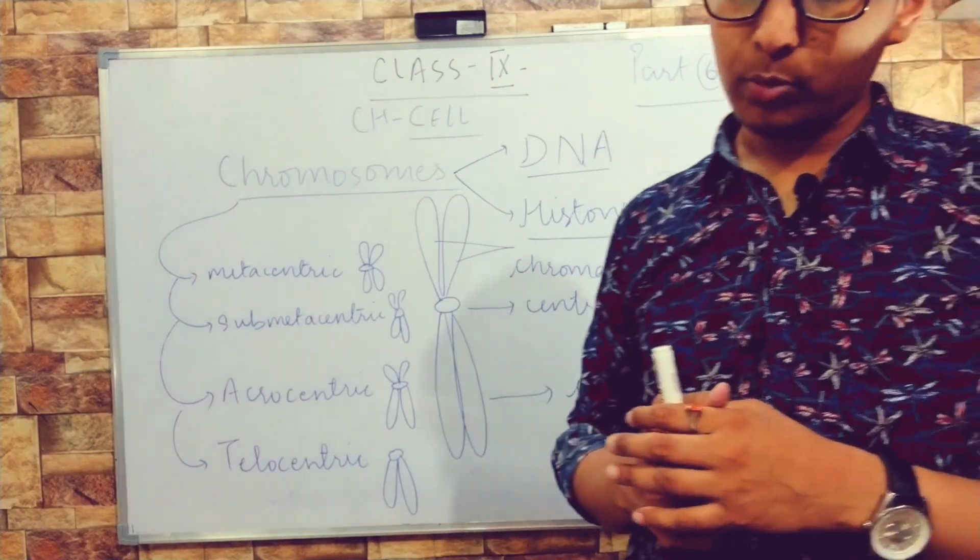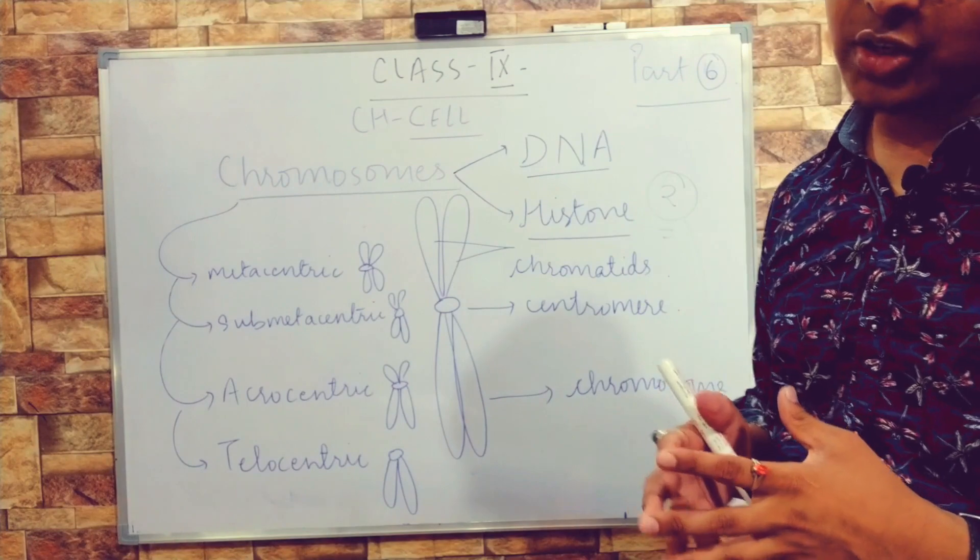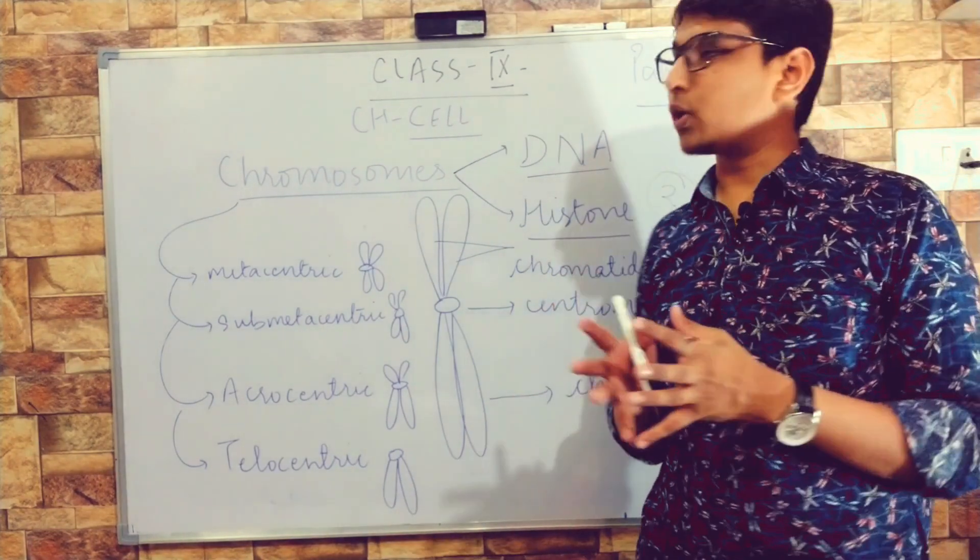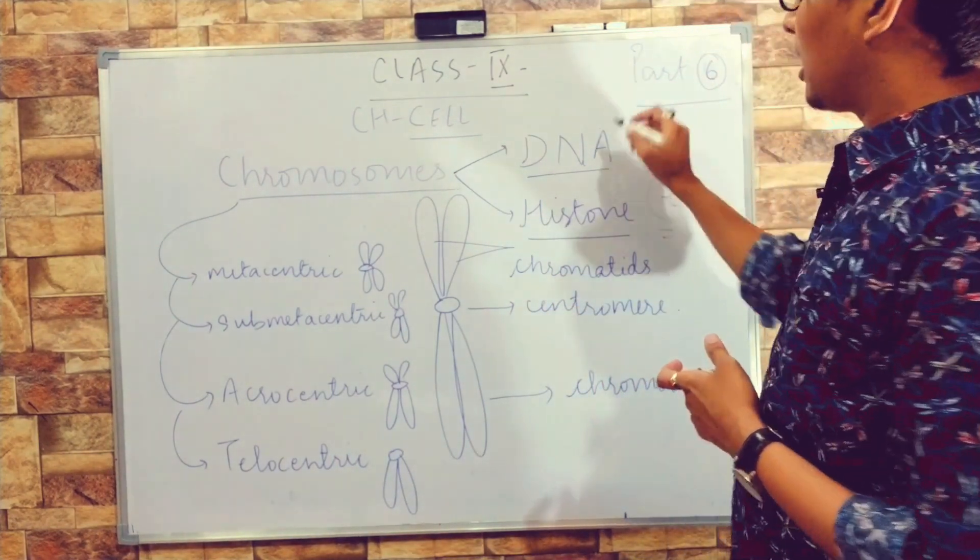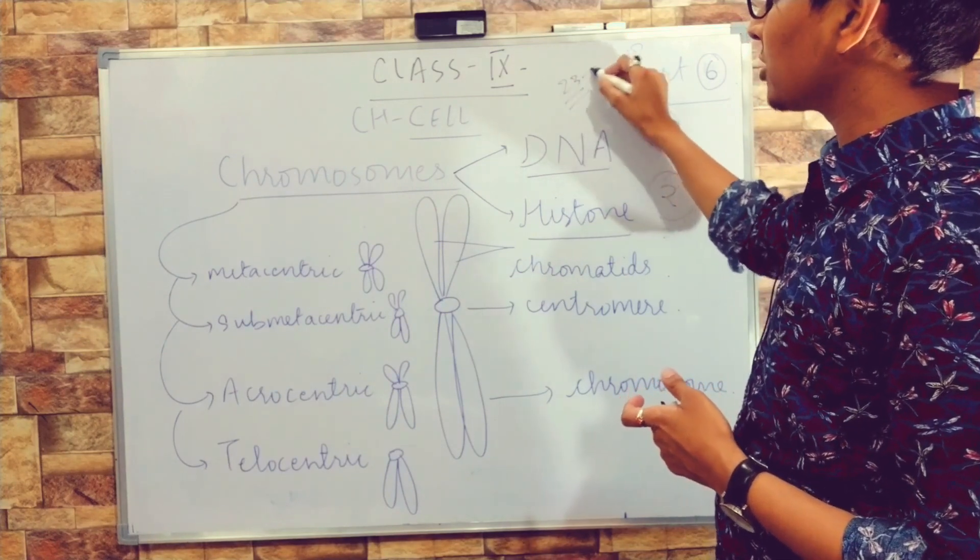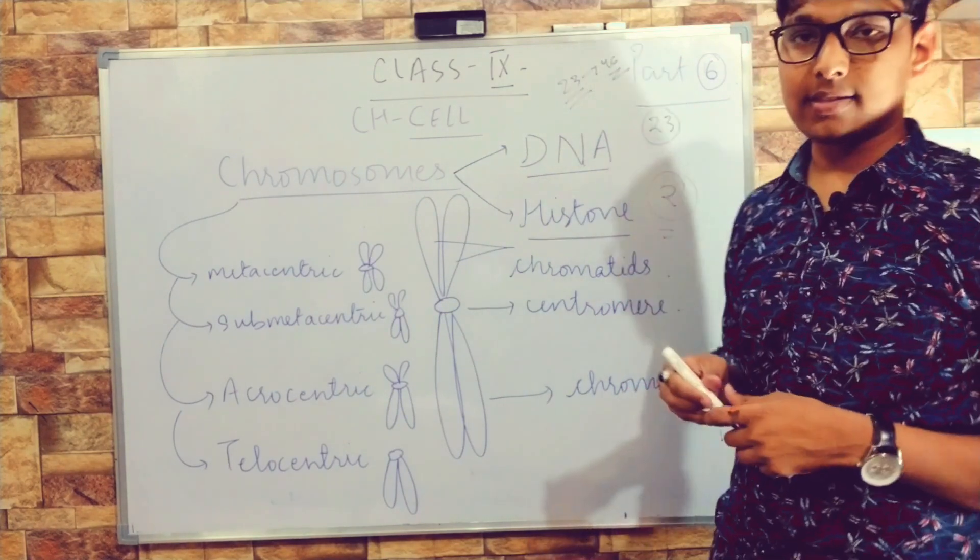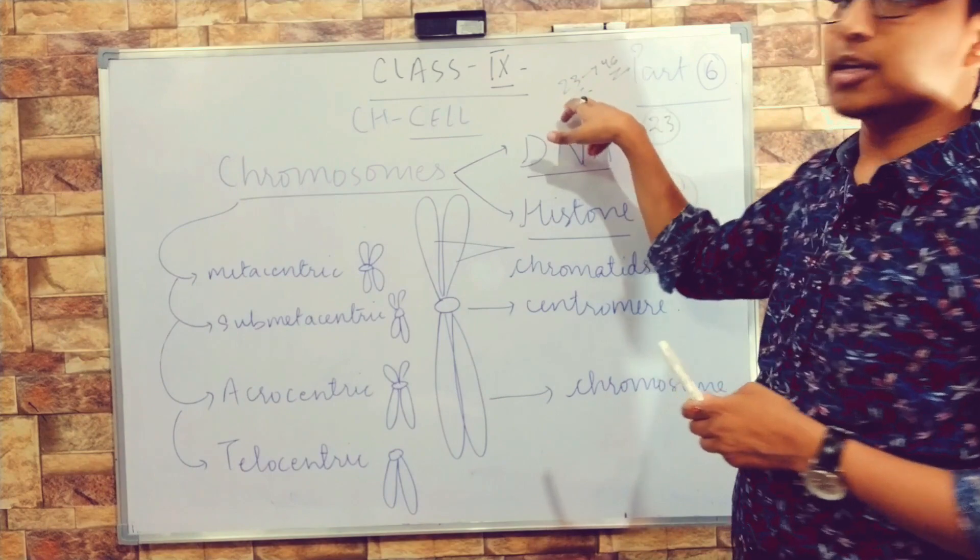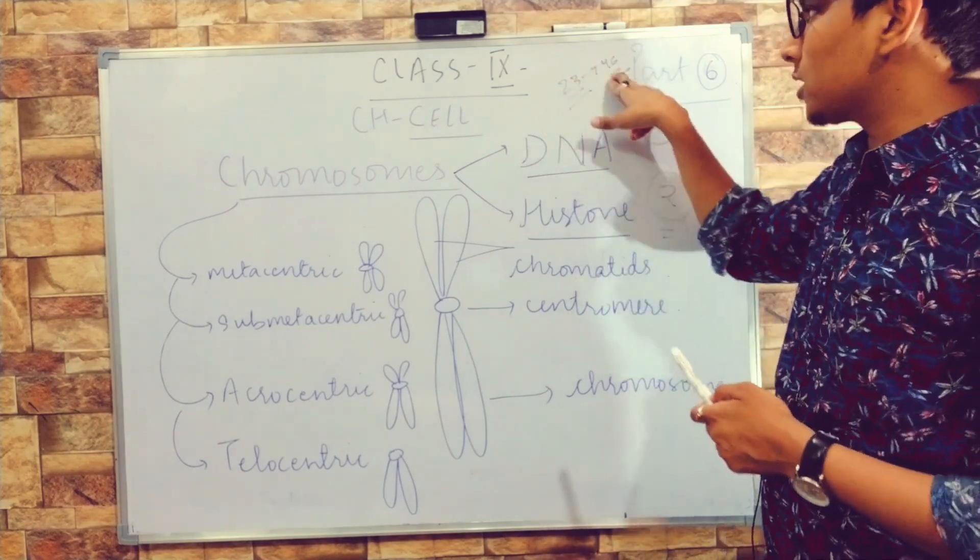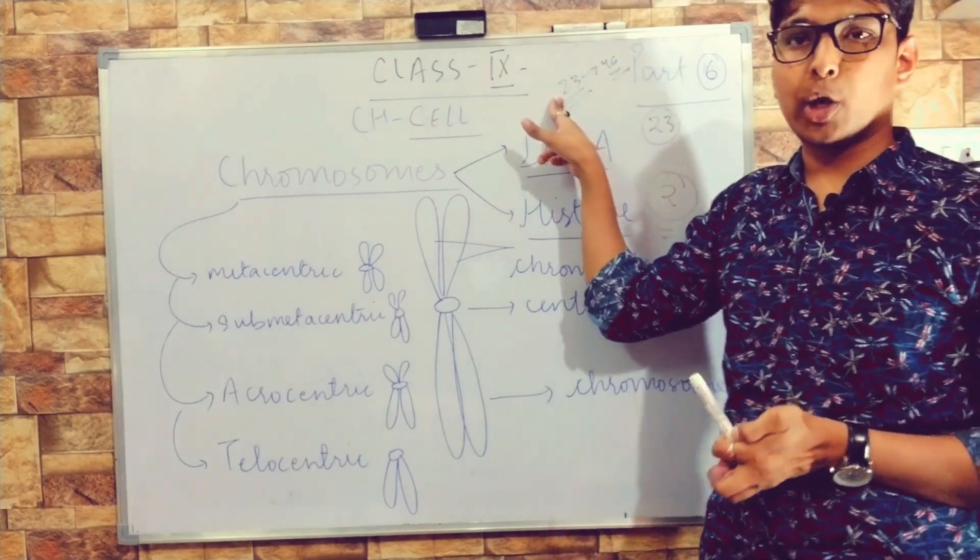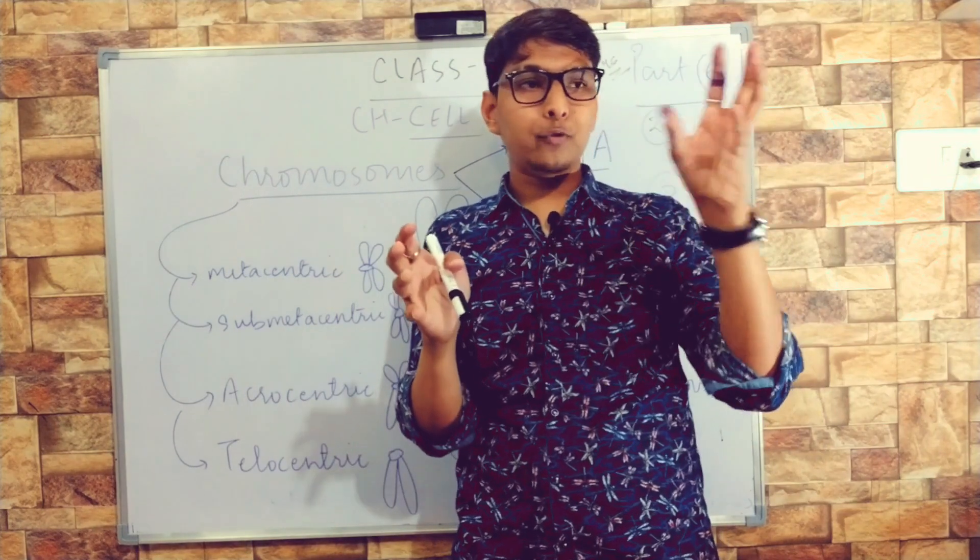But at the time of cell division in germ cells, we get only 23 chromosomes in each cell. Otherwise, 23 pairs are there—pairs means they become 46. But when it is haploid, it is only 23. So 46 is the diploid condition and 23 is the haploid condition. Haploid must be there so that from the mother parent it will come 23, from the father 23, becoming 46.